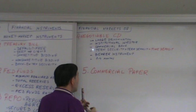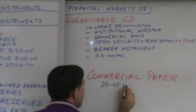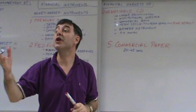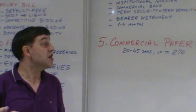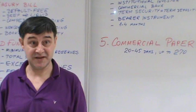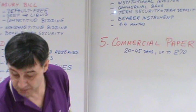Usually 20 to 45 days, but up to 270 days, for some tax and other reasons. So let's call it between one and nine months. That's characteristic number one.